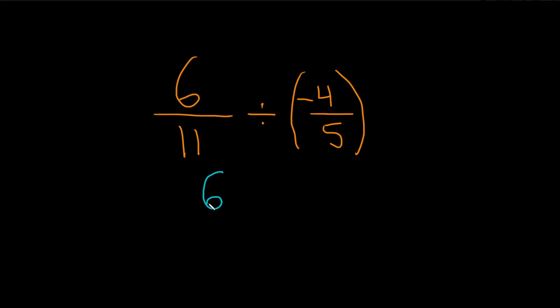So we keep the first number, 6 over 11. The division turns into a times, and then you just end up flipping this fraction. That's how you find the reciprocal. So I'll leave the negative here on the outside and do this 5 over 4.